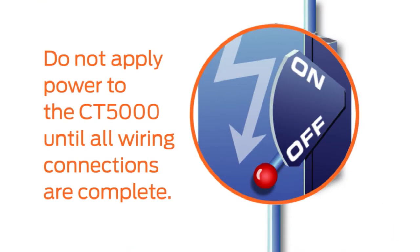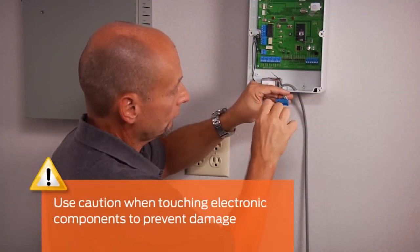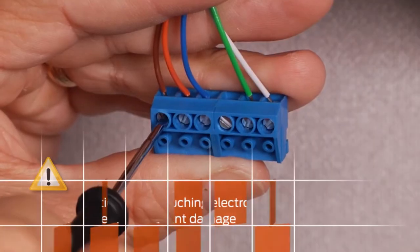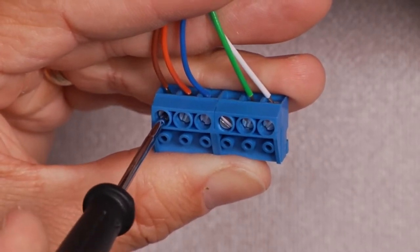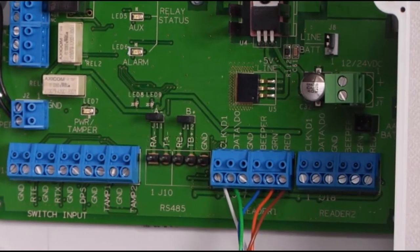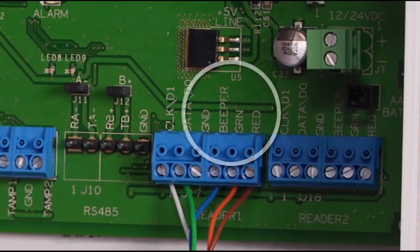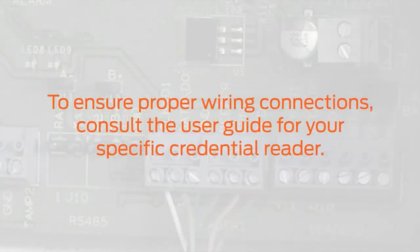Do not apply power to the CT5000 until all wiring connections are complete. Wire the credential reader to the CT5000 by connecting the credential reader data wires into the reader 1 terminal block on the CT5000. In this example, a proximity reader is used. Optional wires such as the LED and beeper should also be connected at this time.